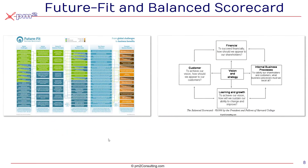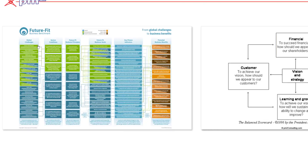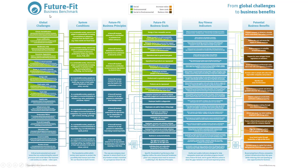Best practices are emerging. The best practices on how we can measure sustainability comes from an organization called the Future Fit Foundation. The Future Fit Foundation has established the business benchmark, which has taken the standard global challenges and broken those down to what are the system's conditions, therefore what are the related business principles, and most importantly, taking those to specific Future Fit Business Benchmark goals. These 21 goals are the core things an organization needs to do to achieve both environmental and societal breakeven points. There are specific, hard, quantifiable metrics behind each one, allowing us to benchmark one organization against another.